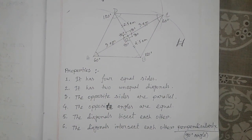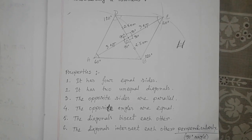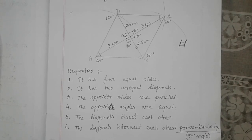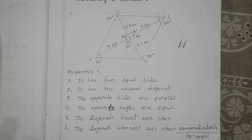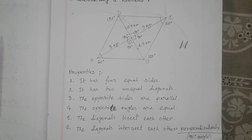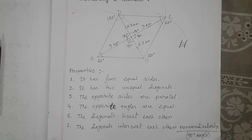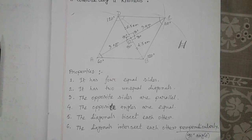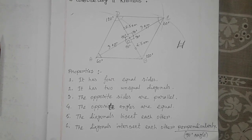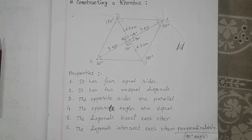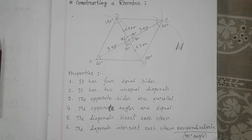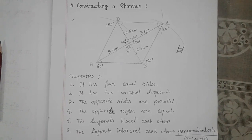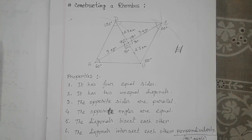So you are all clear now about the properties of the Rhombus. There are many properties and I have already written six of them. These are all important for you. I think it makes everything clear — you all now know how to construct a Rhombus and what its properties are. See you all in the next tutorial, till then goodbye!